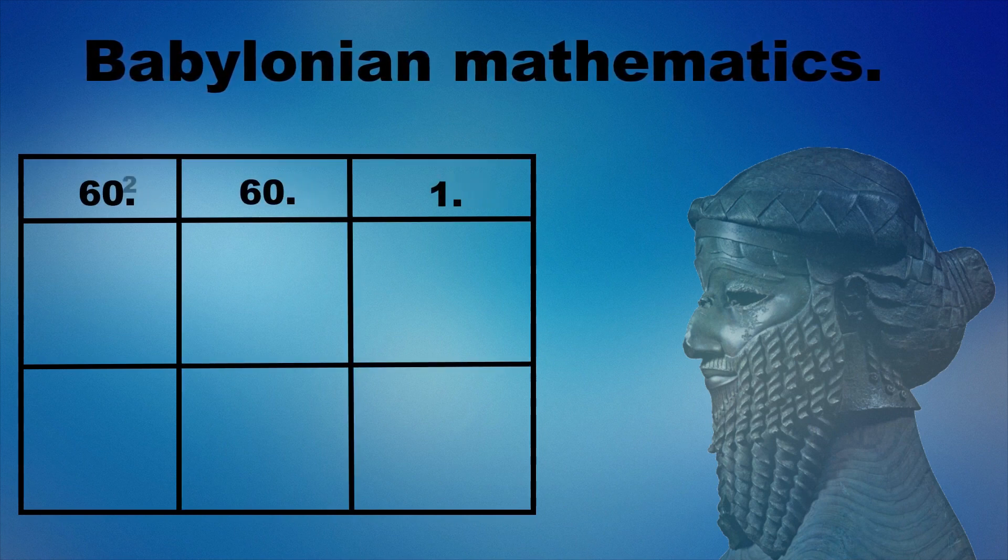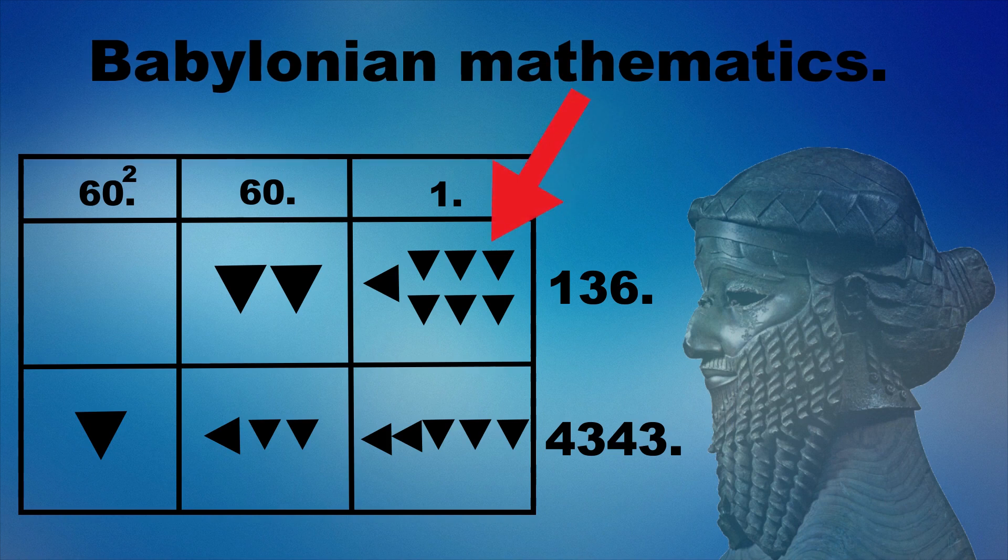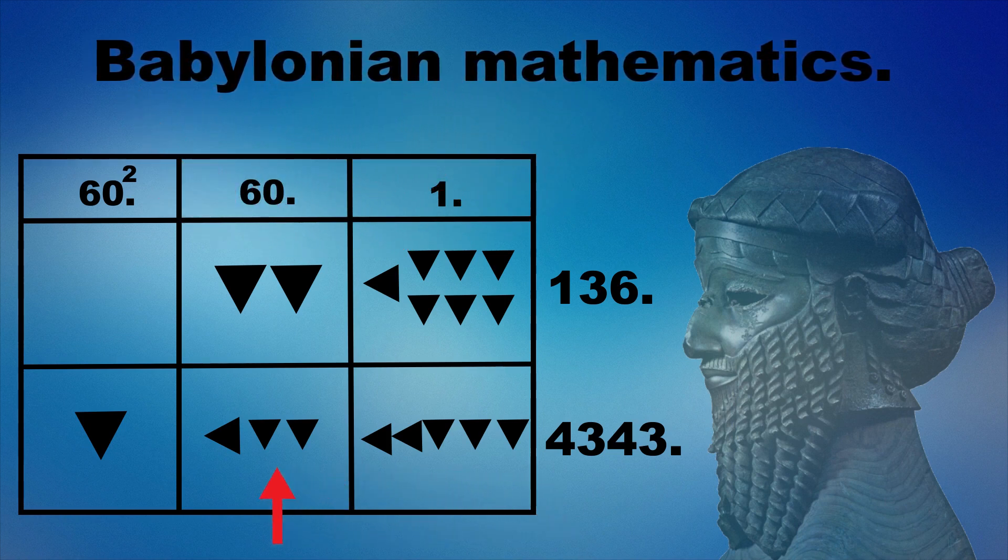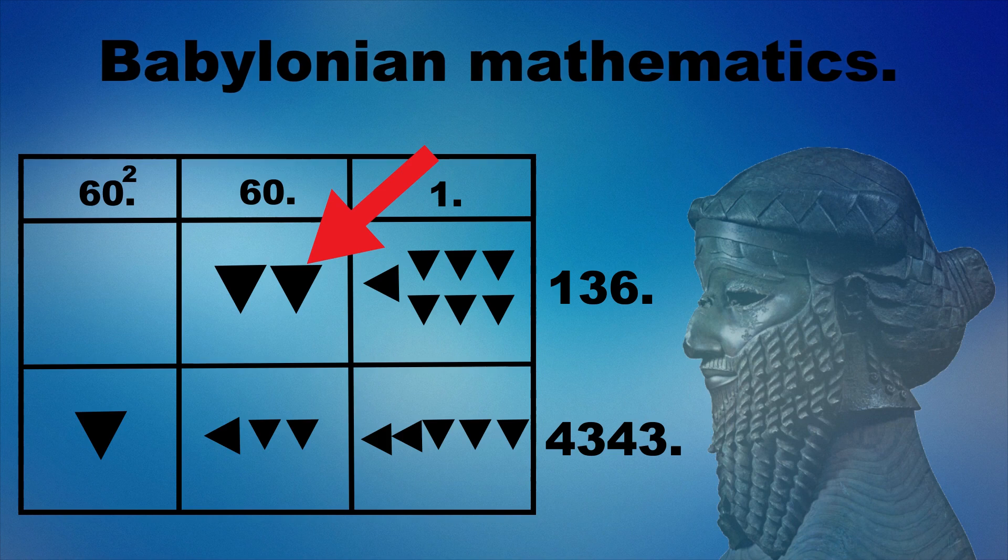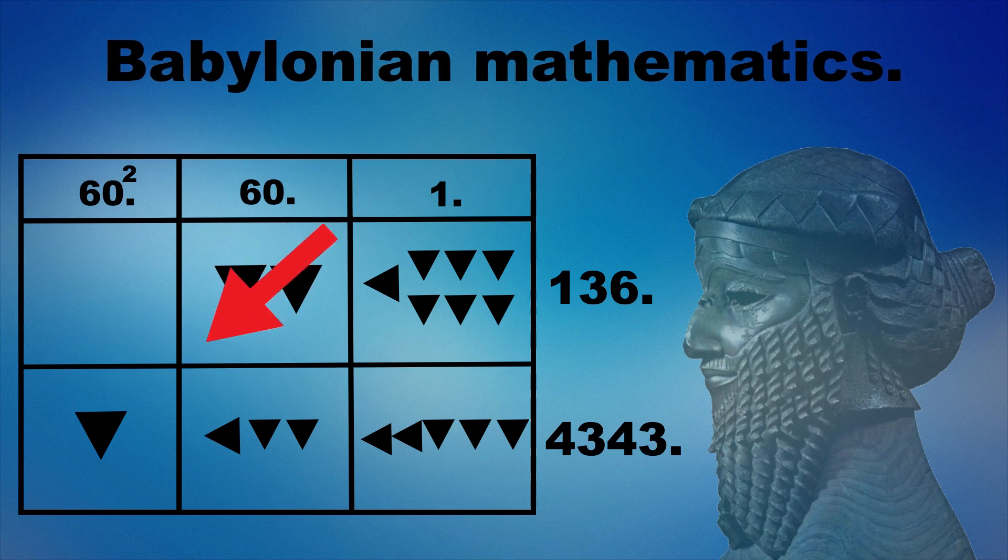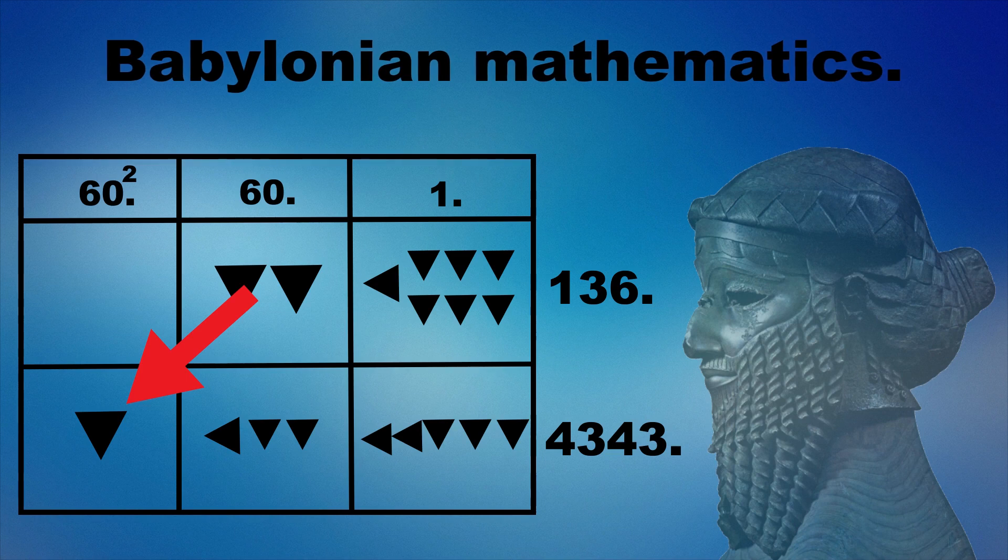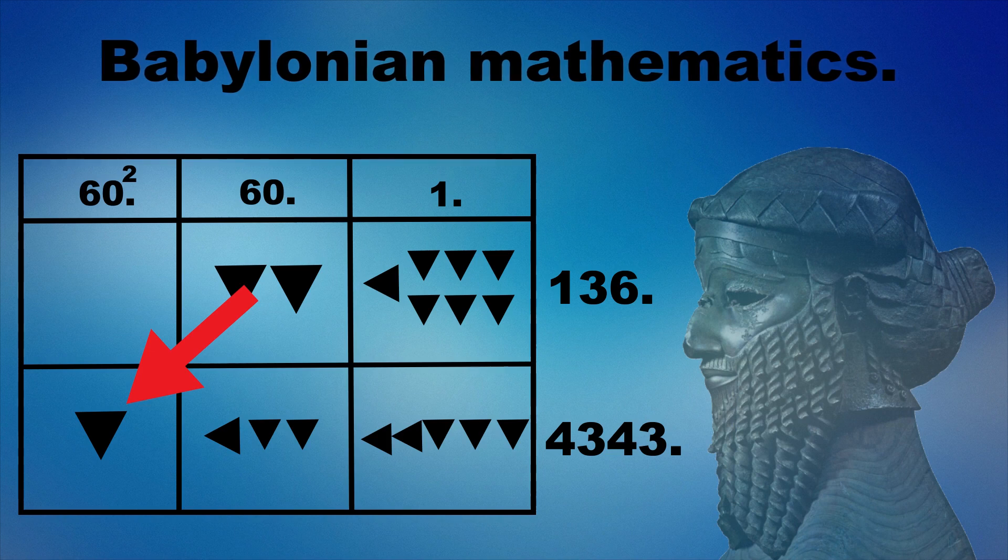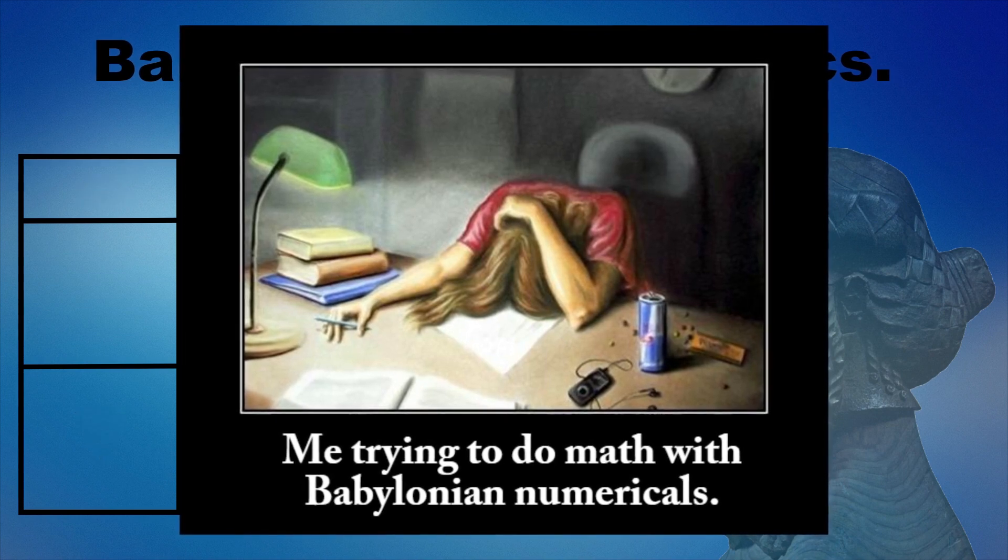To exemplify this we will look at the numbers 136 and 4343. The number 136 is written like this, and the number 4343 like this. The two units in the symbol of 60 do not symbolize the number 2, but rather the number 60 times 2, which is 120. The units in the symbol 60 raised by 2 do not represent the number 1, but rather the number 60 raised by 1, which is 3600. Now you probably have an idea about how the Babylonian numerical system worked, and if you don't, feel free to leave a comment.